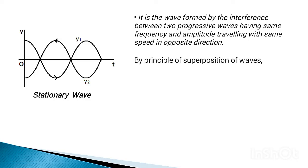The displacement of the resulting stationary wave is obtained by the principle of superposition of waves. According to this principle, Y equals Y1 plus Y2, where Y is the displacement of the resultant standing wave and Y1 and Y2 are the displacements of the individual progressive waves.